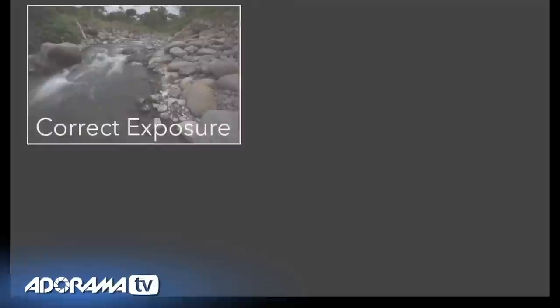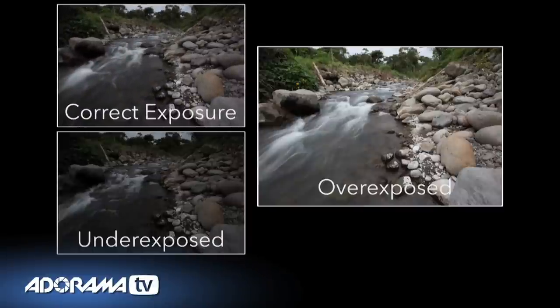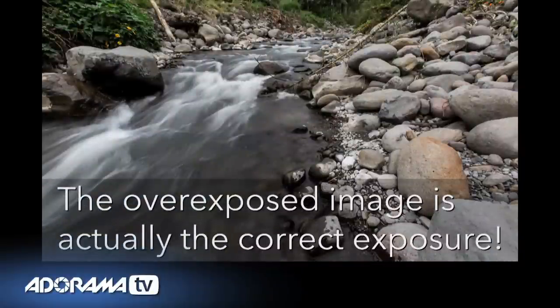Before we get into how auto exposure bracketing works, let's talk about why you might want to use it. Traditionally, auto exposure bracketing is used in one of two scenarios. The first is when you're not quite certain of your exposure but you want to make absolutely certain you get the shot — something landscape photographers have been using for years. AEB is also used to create HDR images.